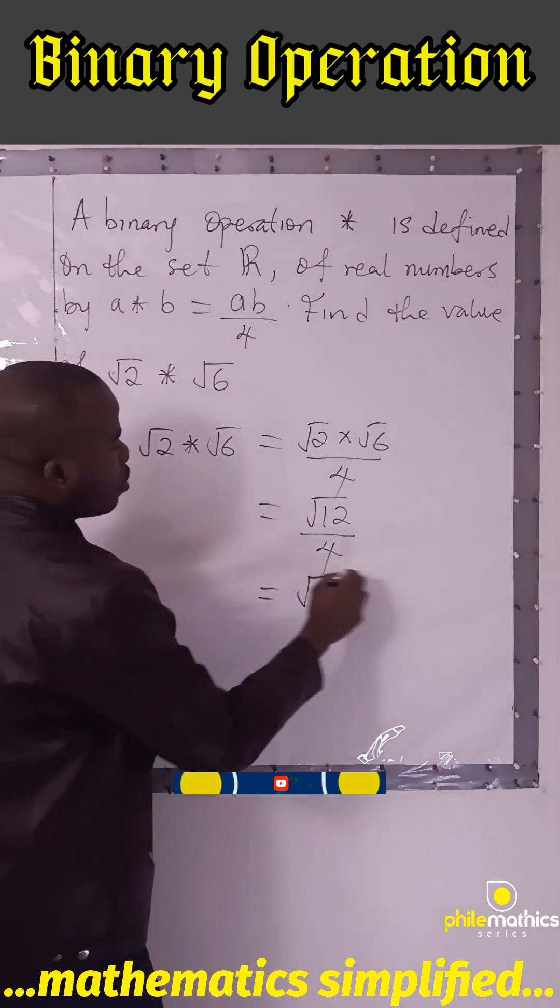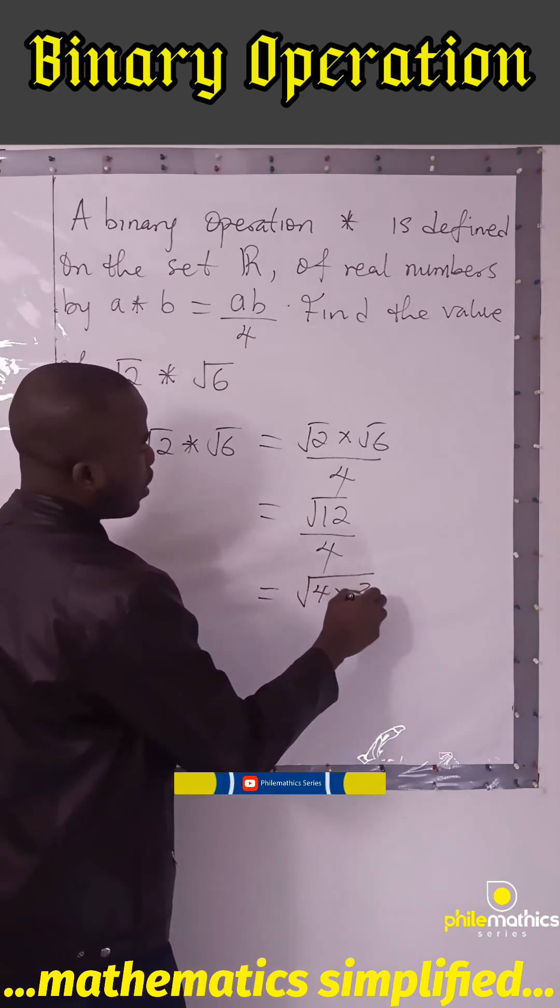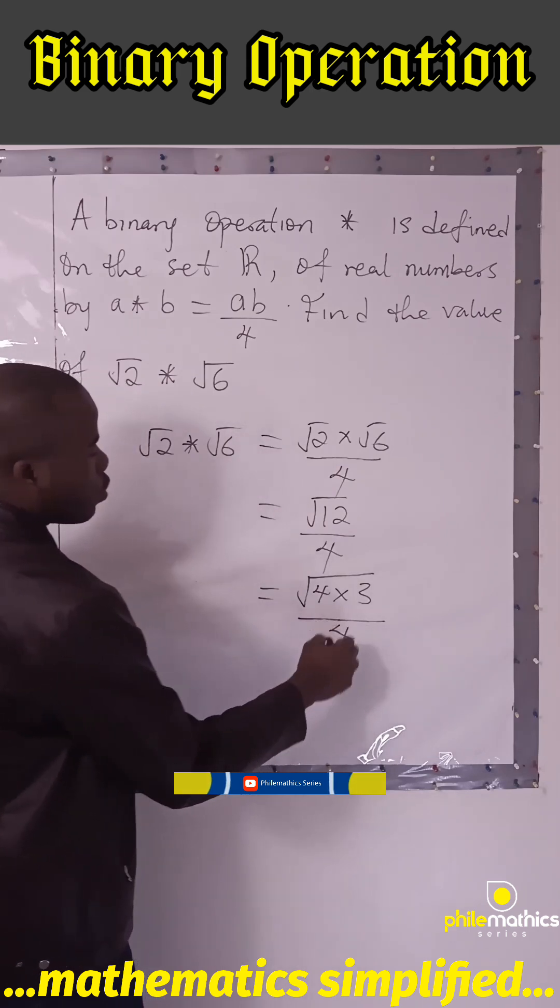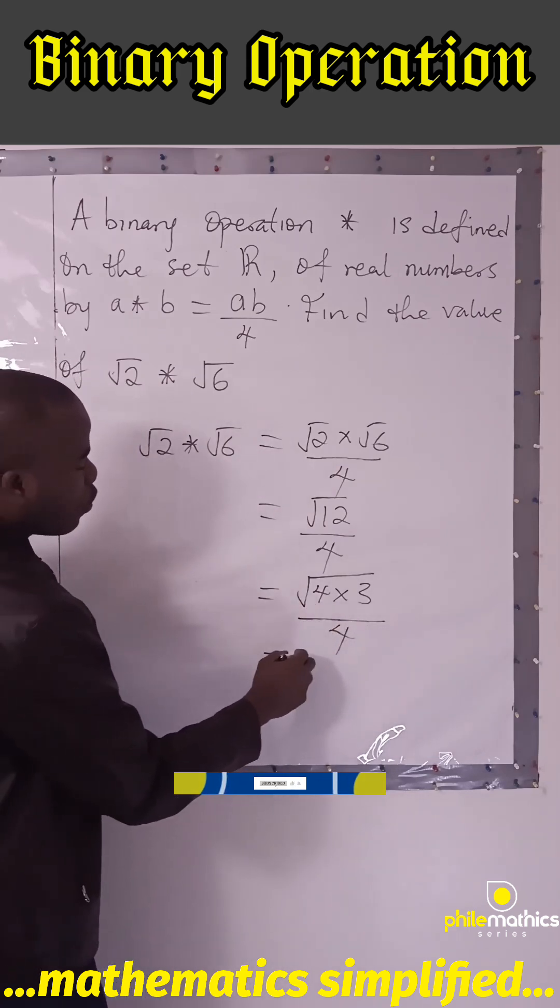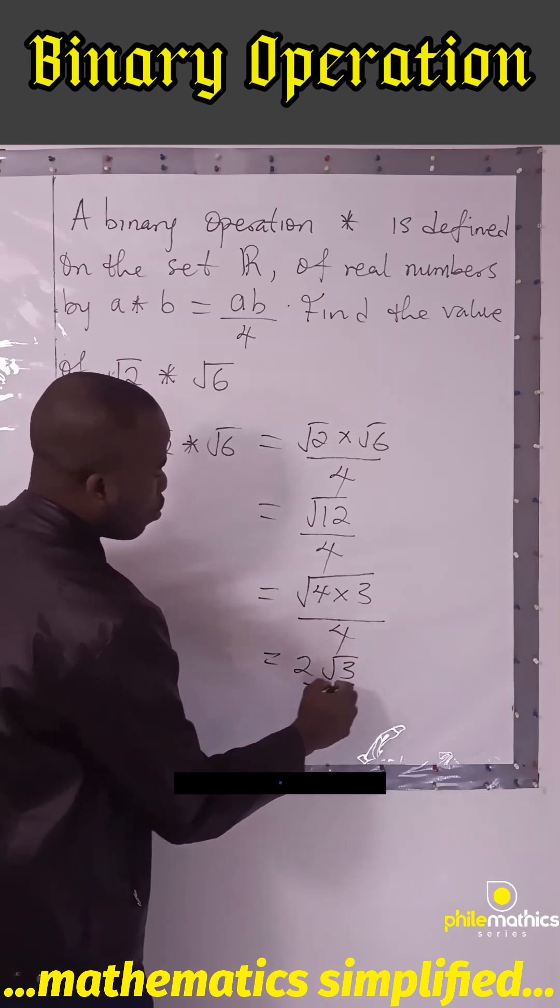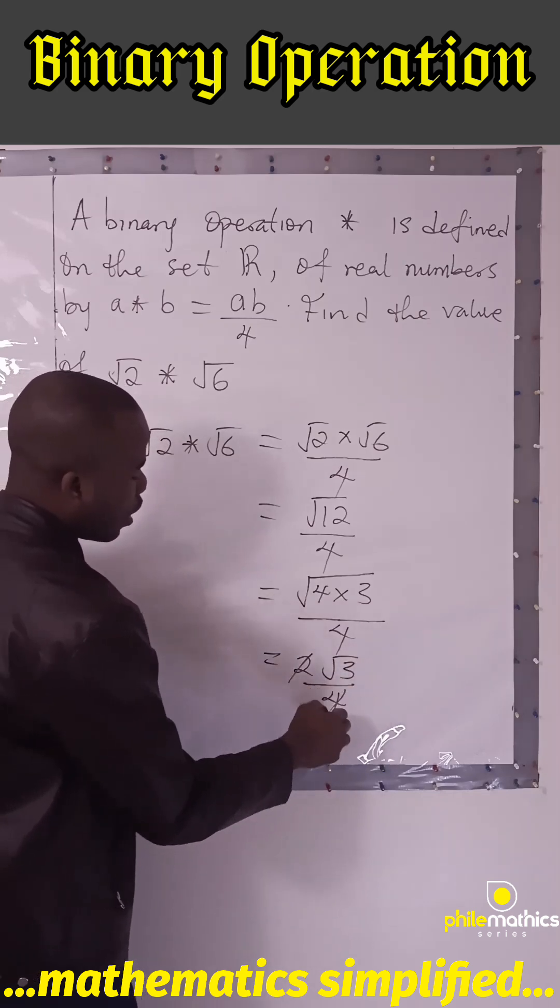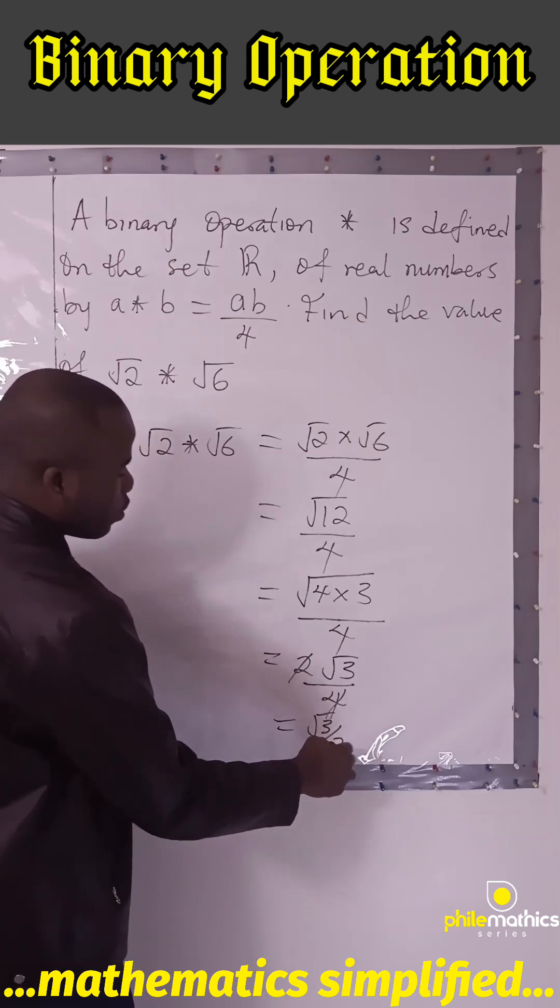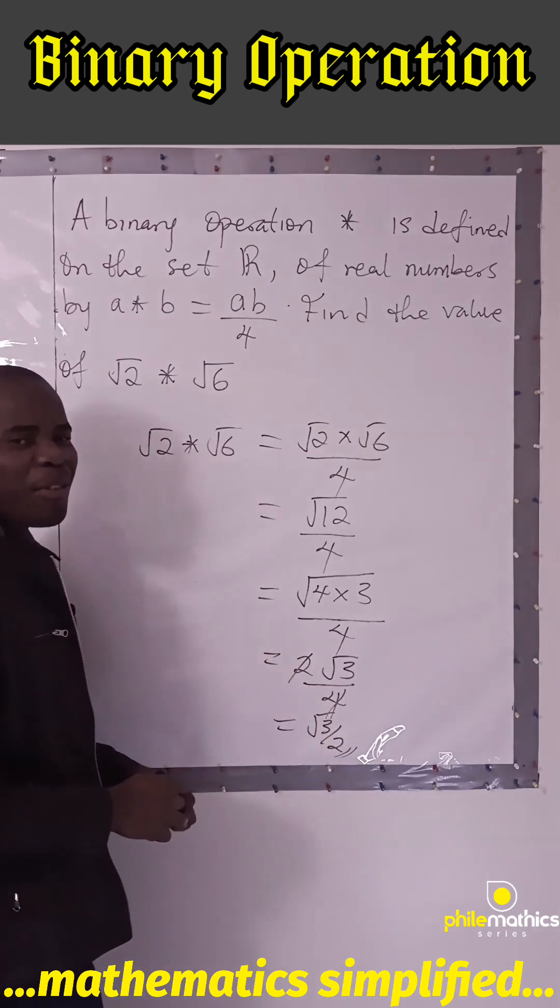Since root 4 equals 2, we have 2 root 3 over 4. Simplifying 2 over 4 to 1/2, we're left with root 3 over 2. Thank you for watching.